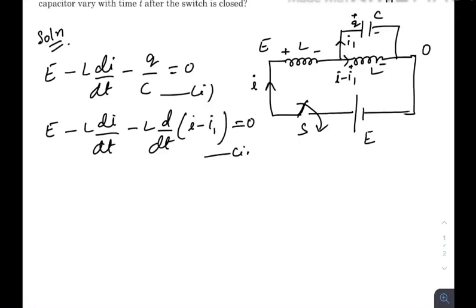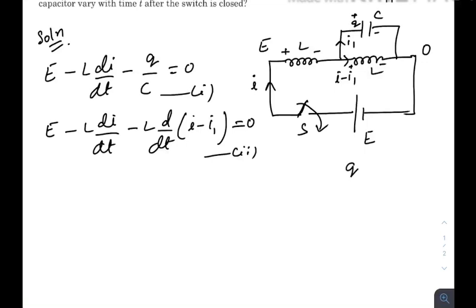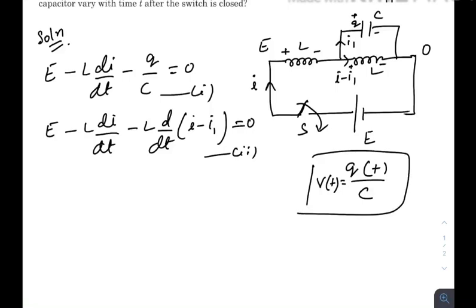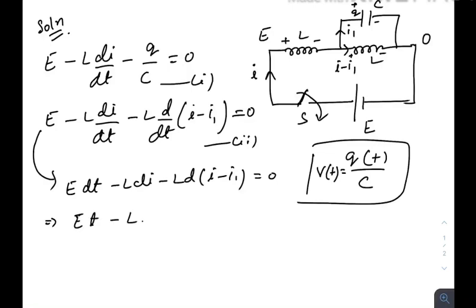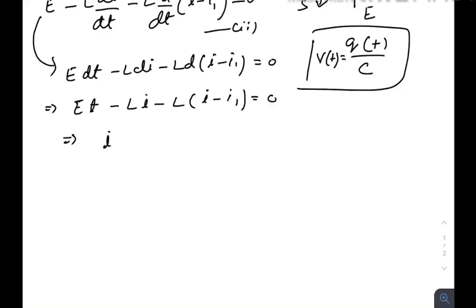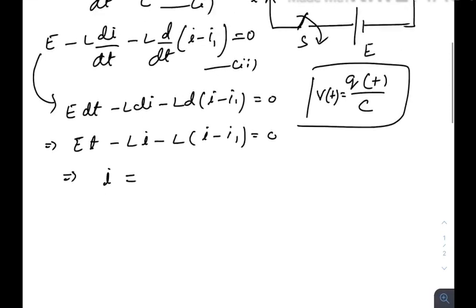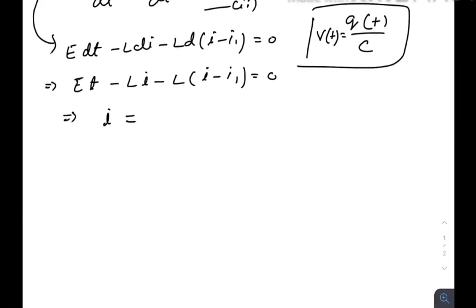We need to find the potential difference as a function of time across the capacitor. If at any time we can find out the charge inside the capacitor we can divide it by C to get the potential difference. From the second equation, we integrate by multiplying both sides with dt. This gives us: E·t minus L·i minus L·(i minus i₁) equals zero after integration. So i as a function of time is: i = (1/2L)·(E·t minus L·i₁), solving it gives us equation number three.